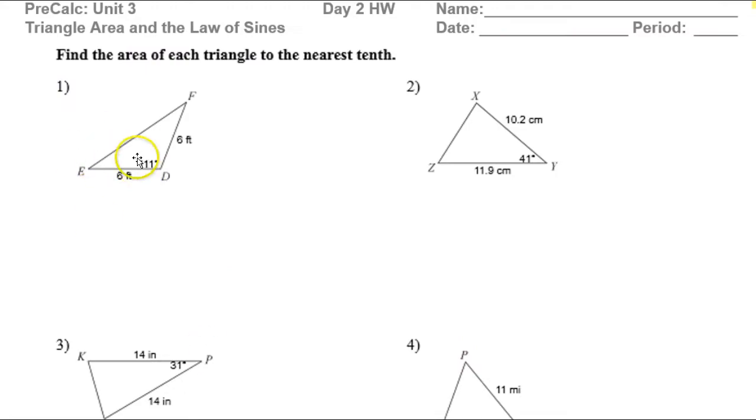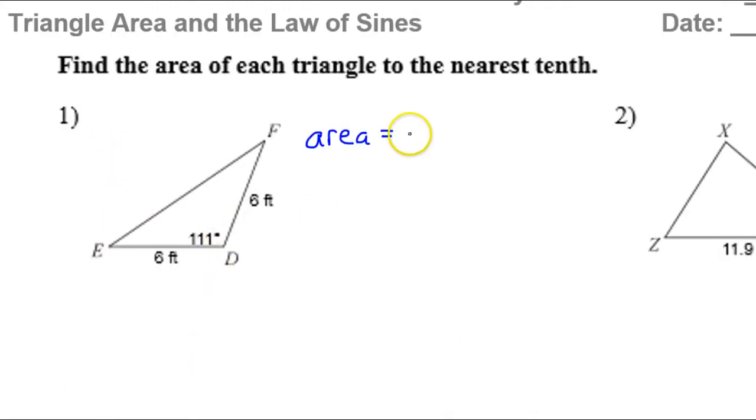Looking at problem number one, the area should equal one-half the product of the two sides, so one-half six times six times the sine of the included angle, 111 degrees.